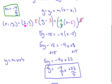y equals negative 4/5 x plus 23/5. And that is my final equation in slope-intercept form. Here's the slope: rise negative 4, run 5. And the y-intercept is 23/5.